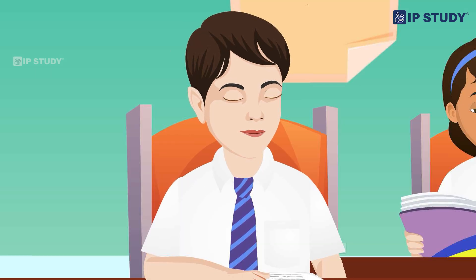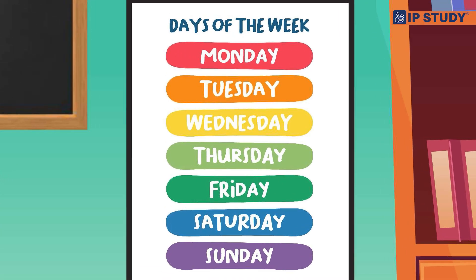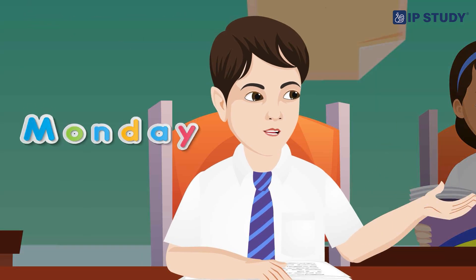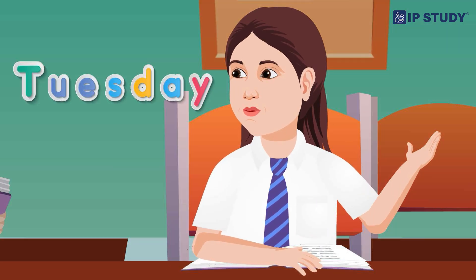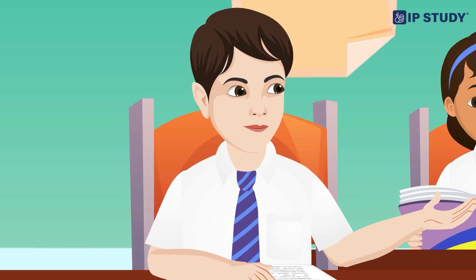Now, let's talk about the days of the week. There are 7 days in a week, starting with Sunday. Do you know which day comes after Sunday? Monday. That's right. Which day comes before Tuesday? Monday again? Exactly, you are really getting it. So now, let's pronounce together.